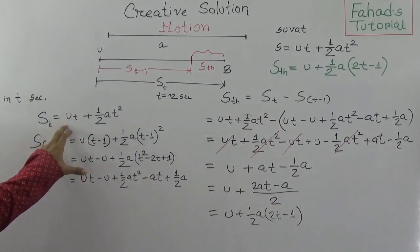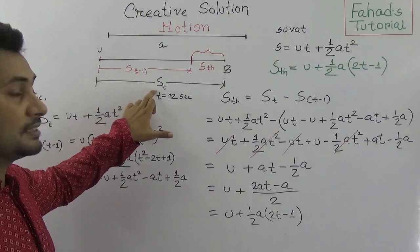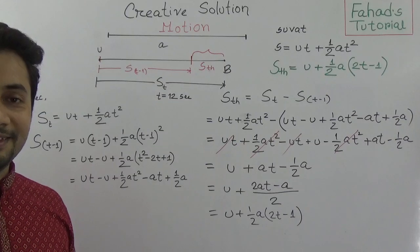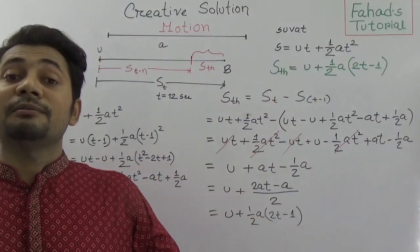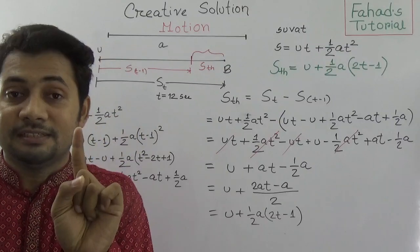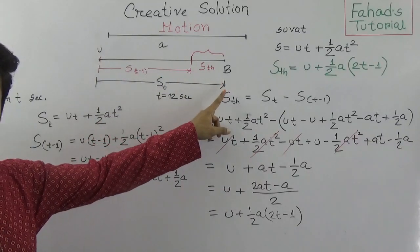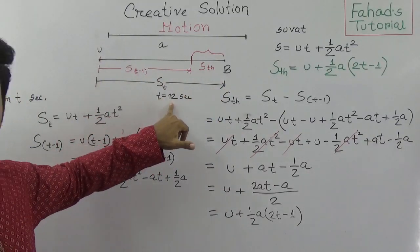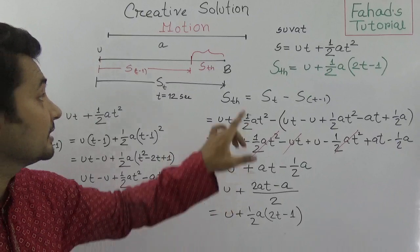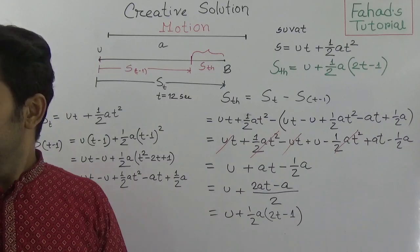Very simply, we found S on that Tth second using the formula. The T is given based on the question paper. We simply use this formula — S_nth = U + ½A(2T − 1) — whenever we need to find the distance travelled in one specific second during a journey. In our example, the 12th second was required, so we subtract the 11th second distance.